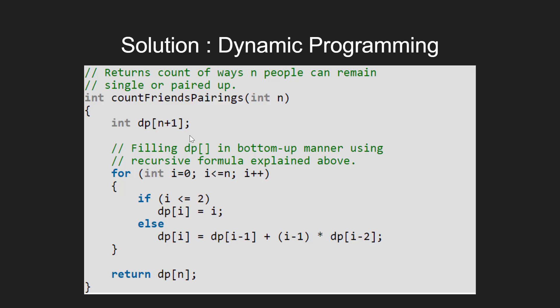Taking care of base cases: if we have one person, they must remain single, so dp[1] = 1. If we have two people, there are two possible arrangements—both remain single or both pair together—so dp[2] = 2.